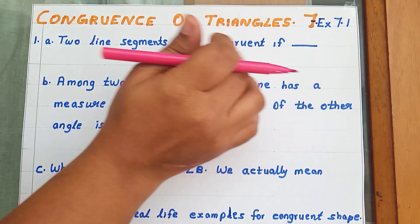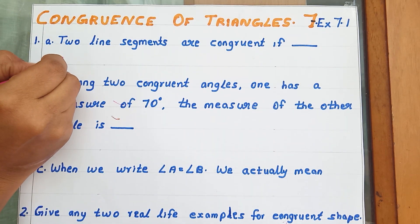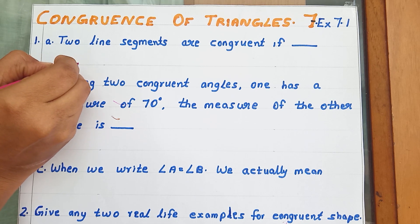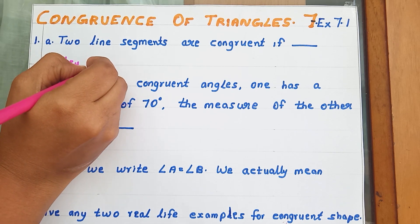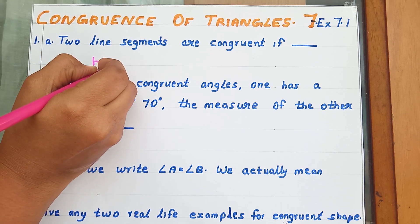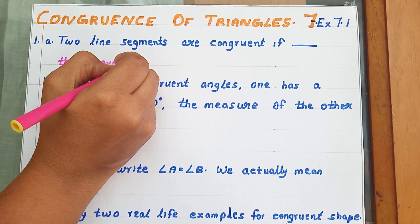So here I can write down: two line segments are congruent if they have the same length.